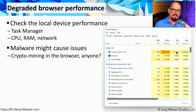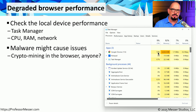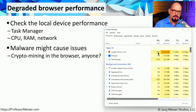I've visited sites before that suddenly slowed down my browser to a crawl, and when I brought up my task manager, I saw that my CPU utilization for the browser was at 100%. This was because this website had a crypto miner running in JavaScript. When I left that website page, suddenly my CPU dropped back down to zero.